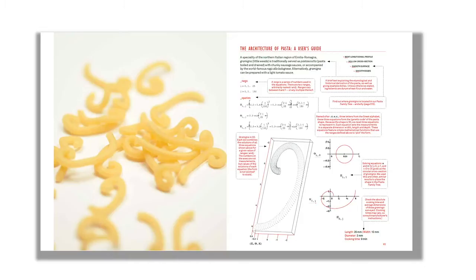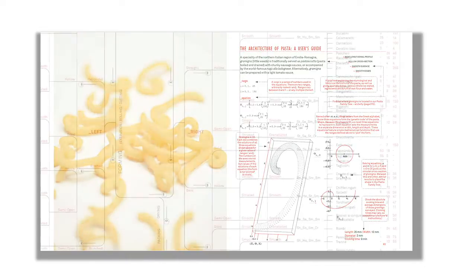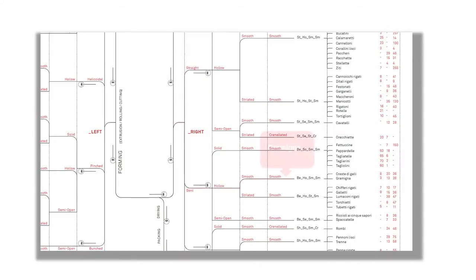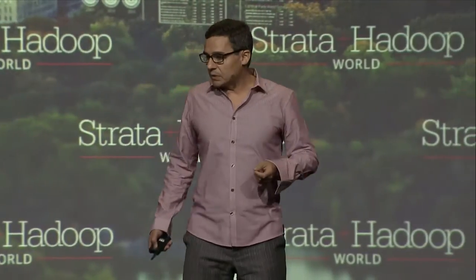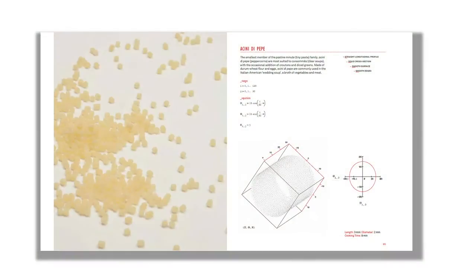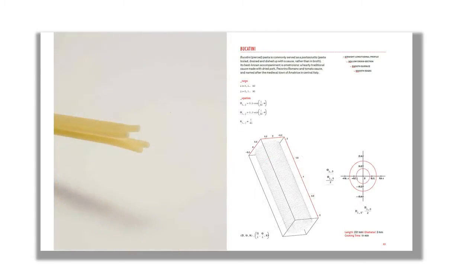We use these and other similar results to position gramigna on the pasta family tree — right here. It's got a bent longitudinal profile, a hollow cross-section, a smooth surface, and smooth edges. Let me run you through a few examples. Let's start with simplicity: this is Acini di Pepe, the smallest of the Pastini Minute — it's basically a tube, with parametric equations of the circle compounded by those of the line. Same for Bucatini — just a tube of different proportions.